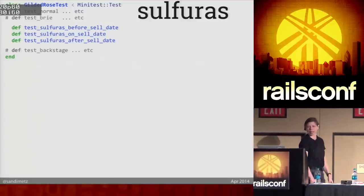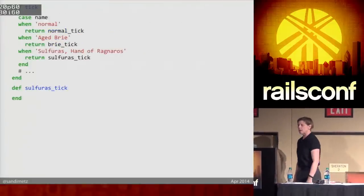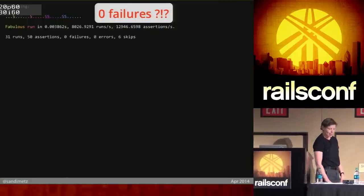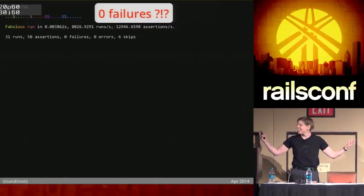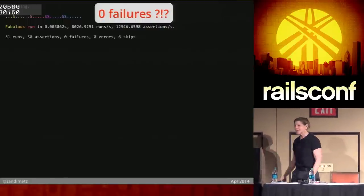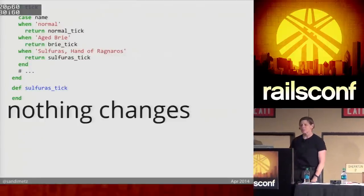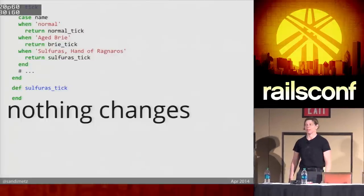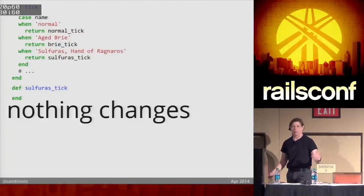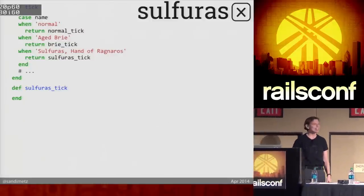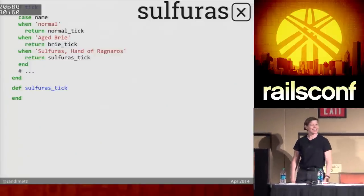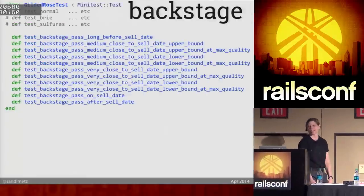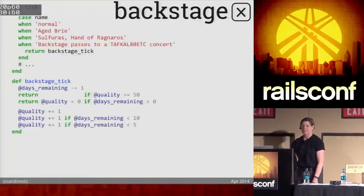Moving on. Here's Sulfur First — there are three tests. I put my shim in, put an empty method, and I would expect three test failures. And yet they all pass. I look at the tests and I realize that all the tests assert that nothing happens if it's Sulfur First. I had no idea when looking at that 43-line if statement that it all asserted that nothing happened. So it turns out this is the code that makes the test pass. Here's Backstage — there are a bunch of tests and it looks like this. That's the code that makes them pass.